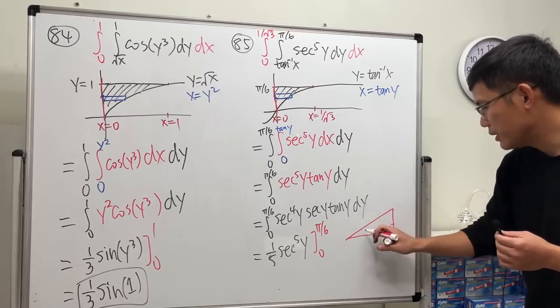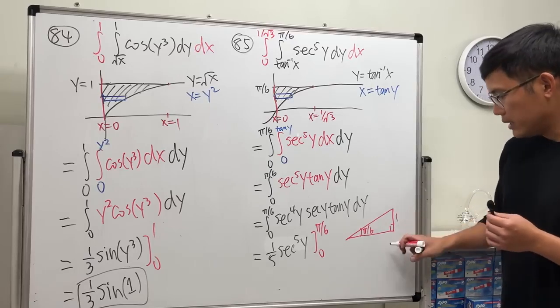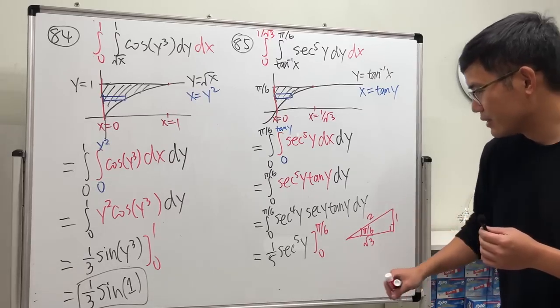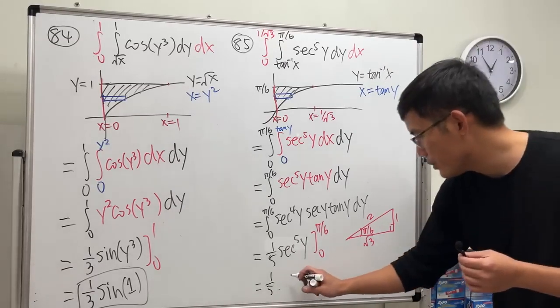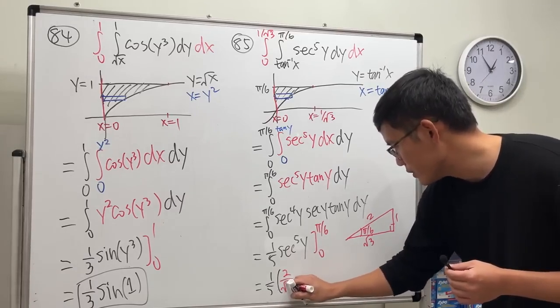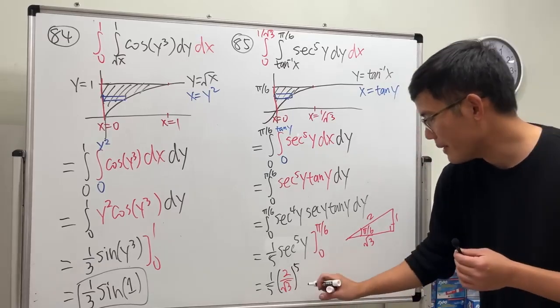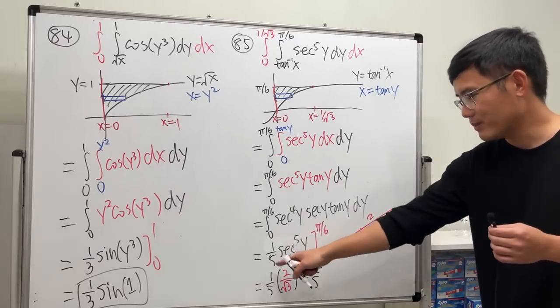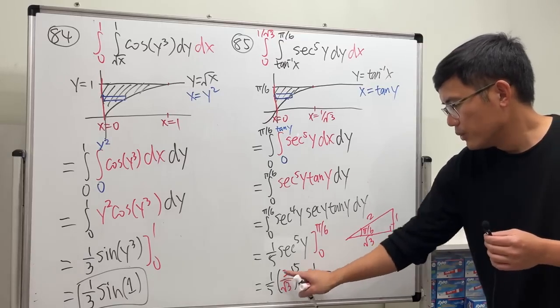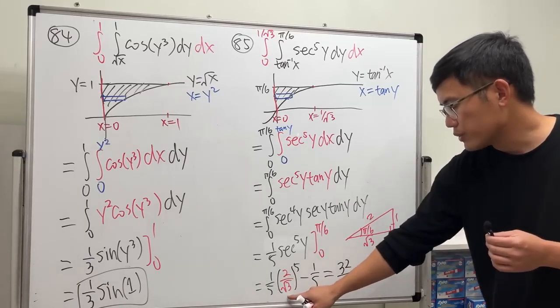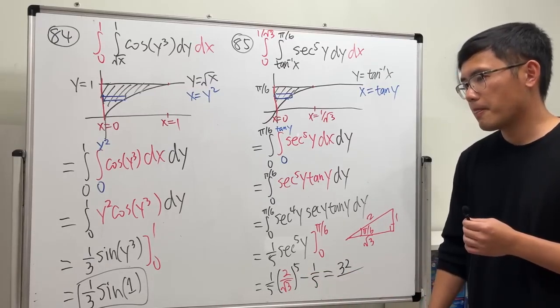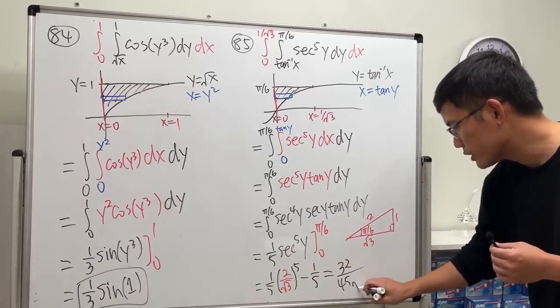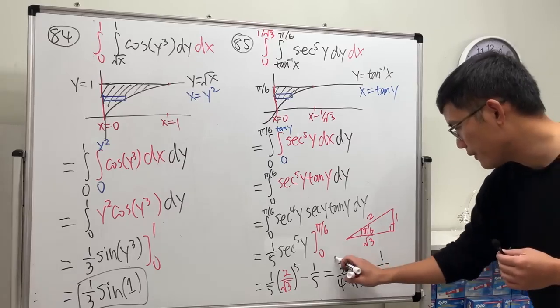What's secant of π over six though? π over six is 30 degrees right here. And then we will have one, square root of three, and two. And secant is this over that, so we are going to get one over five, and then two over square root of three to the fifth power. That's the first term. And then minus, push through, in here we get one, so it's one over five. Secant of zero is one, to the fifth power is one, and multiply by that. Finally, we just clean things up. Two to the fifth power is 32. Square root of three to the fifth power is... three times three is nine because two of the threes come out, so nine. Nine times five is 45, and then one more square root of three. And then lastly, minus one over five.